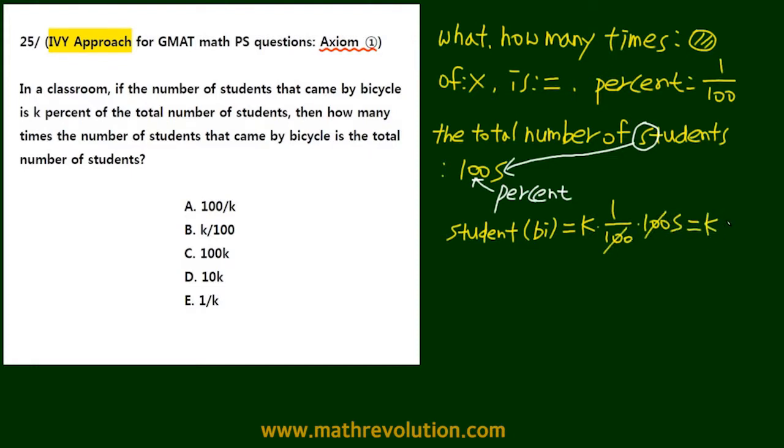So we cross out s, so something equals 100 over k, and we get our answer choice A.